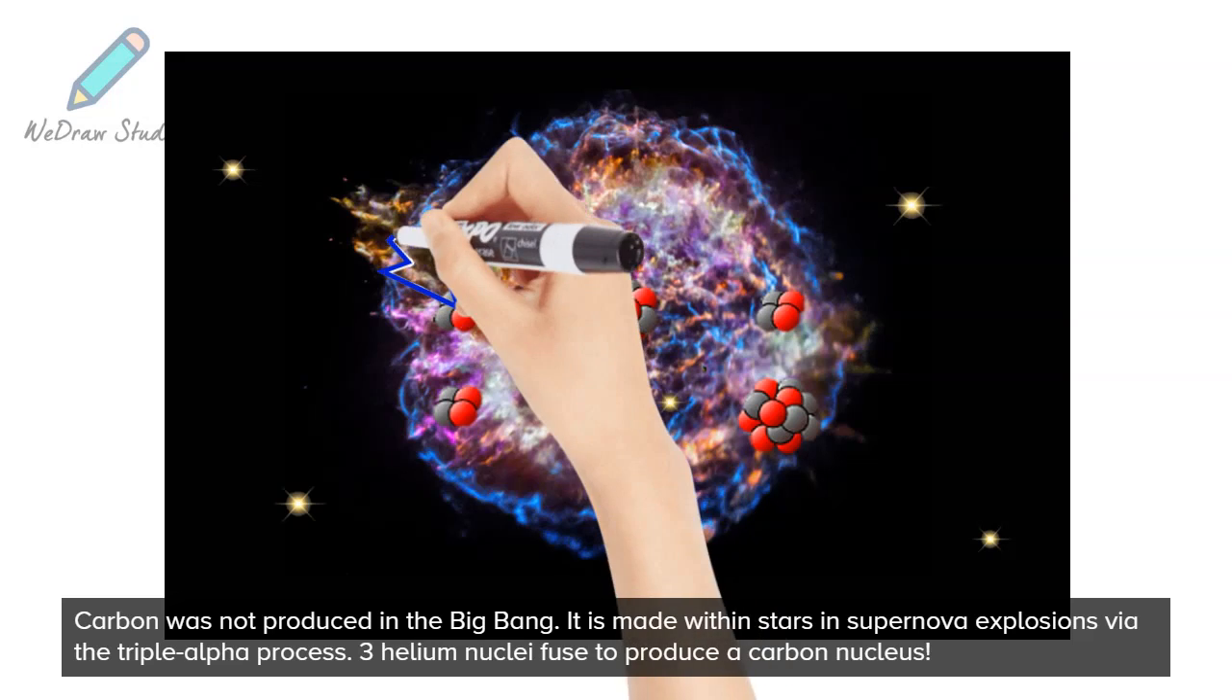Carbon is the fourth most common element in the universe, after hydrogen, helium and oxygen. It is the 15th most abundant element in the Earth's crust. Carbon was not produced in the Big Bang. It is made within stars and supernova explosions via the triple alpha process. Three helium nuclei fused to produce a carbon nucleus.